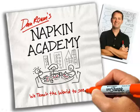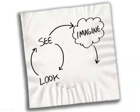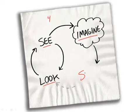This is Dan, and this is the Napkin Academy. This lesson is process step number four in the visual thinking process. We've learned how to look, we've learned how to see, we've learned how to imagine, and now we are going to learn how to show.